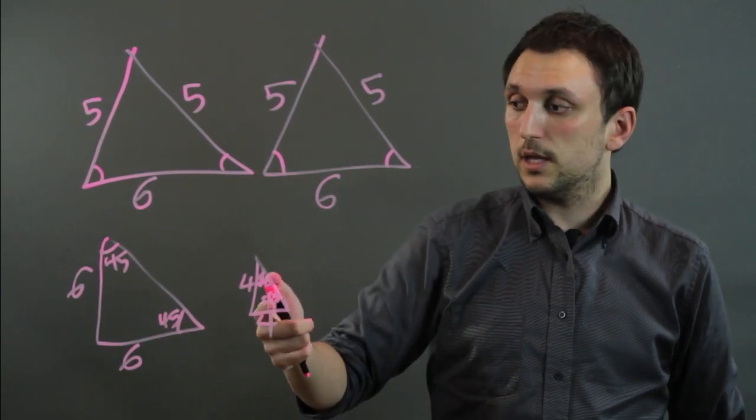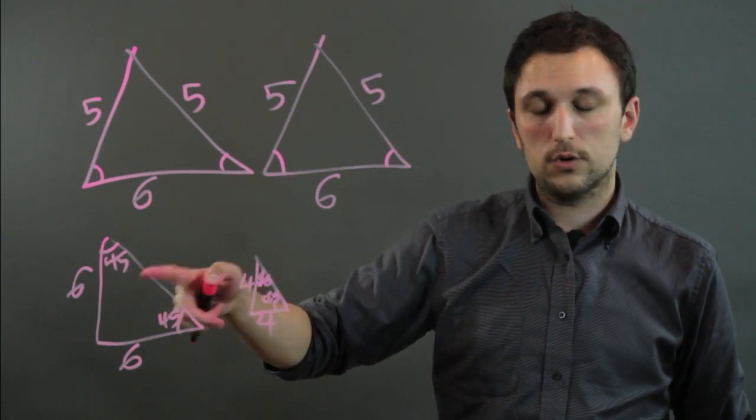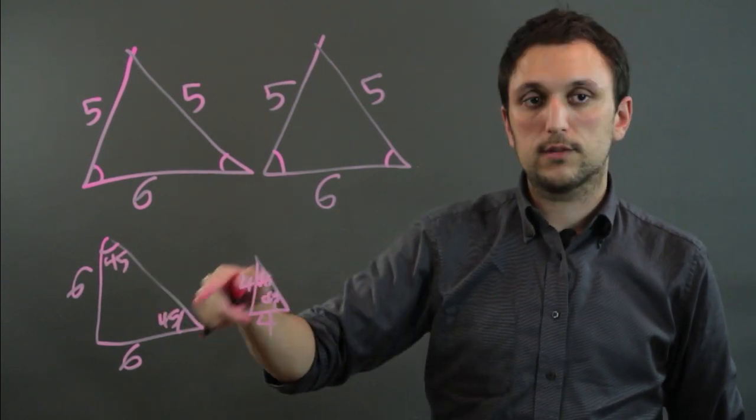Well, these are not congruent. They're similar because the angles are all the same, which means that they're proportional, but they're not congruent because the sides are not the same.